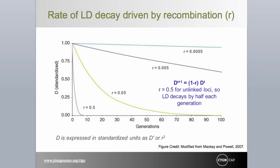The decay of linkage disequilibrium, as influenced by the recombination fraction designated here by the letter R, is described by the equation shown here. For unlinked loci, where R equals 0.5, LD decays rapidly within a small number of generations. Though in some cases LD may never go completely to zero, it generally comes very close. For closely linked loci, the decay in LD is extremely slow. For two loci located roughly 25 centimorgans apart, within 10 generations D will be around 0.06.